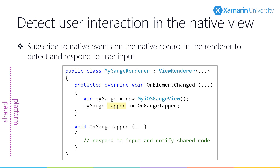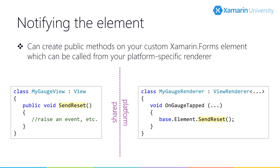Let's start by looking at the case where the platform renderer needs to notify the shared code. The user interacts with the platform-specific control presented by the renderer — it might be something as simple as a tap, or more complex interactions or gestures. The renderer needs to send a notification to the shared code, and the shared code responds by updating some part of the UI or whatever it needs to do. In our renderer, after we create the native control, we can subscribe to events on the native control. And since we have access to the Xamarin Forms element, we can create a new method on the element and call it from the renderer. You can then update the Xamarin Forms side however you want, and a useful strategy is to create a public event in the element so other parts of shared code can be notified.